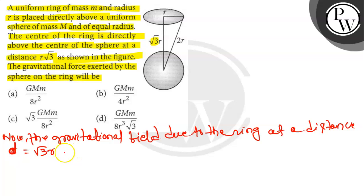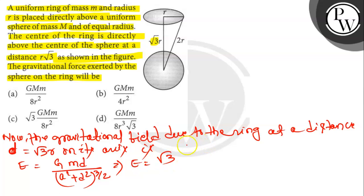Root 3 r on its axis is E equals GMd divided by (a squared plus b squared) to the power 3 by 2. So here it implies E equals root 3 GMr divided by (a squared plus root 3 r squared) to the power 3 by 2. That implies E equals root 3 GM divided by 8 r squared.